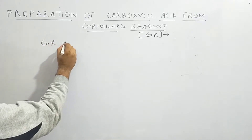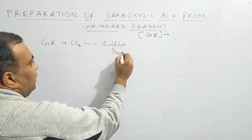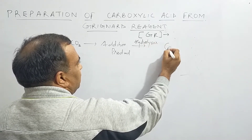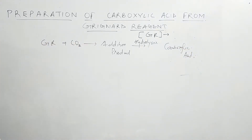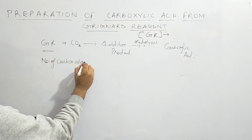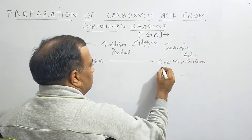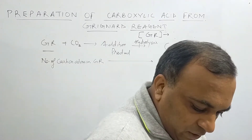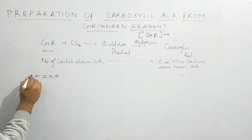The Grignard reagent is made to react with carbon dioxide. This gives an addition product, and that addition product on hydrolysis gives carboxylic acid. The most important thing to remember is that the carboxylic acid formed contains one more carbon atom than the Grignard reagent.